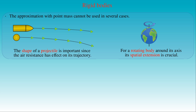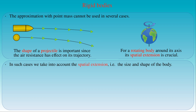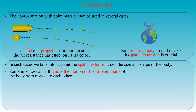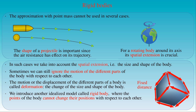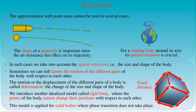In such cases we need to take into consideration the extension and the shape of the body. If we take the size or shape of the body into account, in some cases we can still ignore the motion of the different parts of the body with respect to each other. The motion or displacement of different parts of a body is called deformation, which is a process where the size and shape of a body is changing. If we neglect the deformation, we can introduce another idealized model called a rigid body, where the points in the object cannot change their positions with respect to each other. The model of rigid bodies can be applied in the study of a broad class of phenomena in mechanics, provided no phase transition takes place in the process.